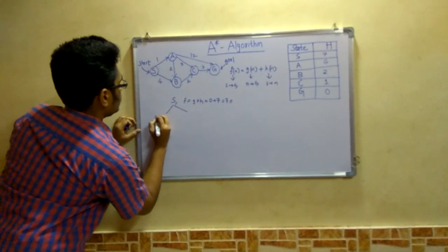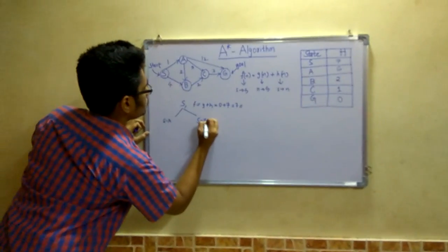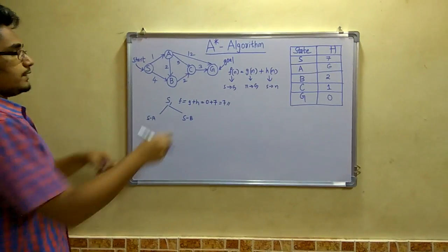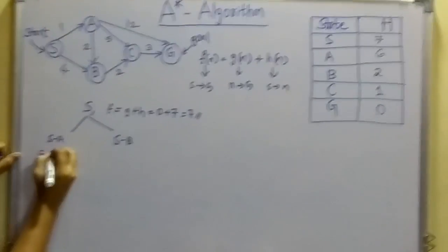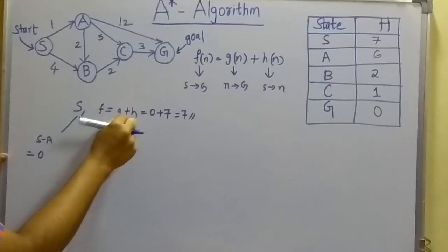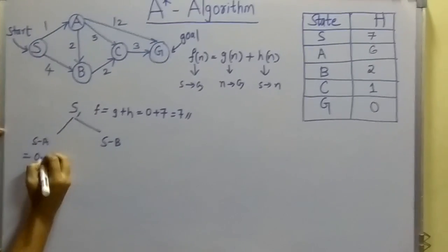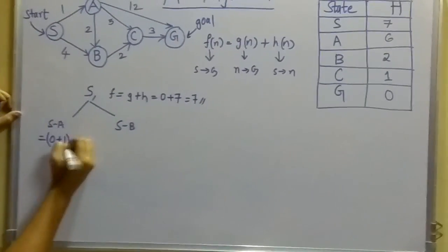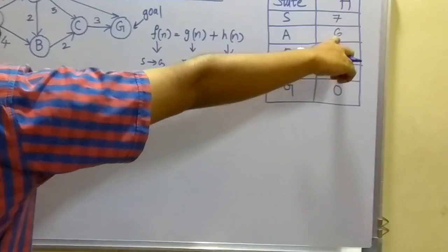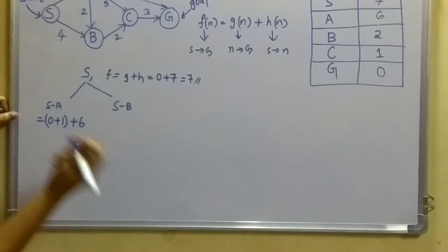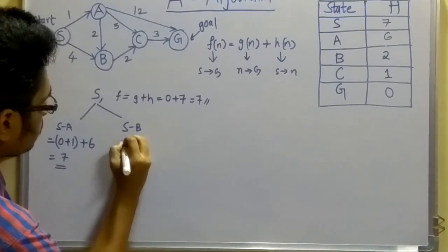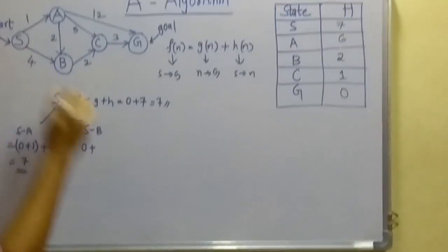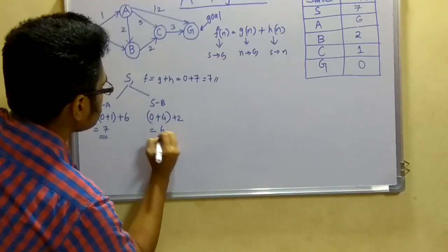For S to A, applying F = G + H: G remains 0 from S, and S to A distance is 1, plus the heuristic value of A which is 6. So that comes out to be 7. For S to B: G is 0, plus S to B distance is 4, and the heuristic of B is 2. So it comes out to be 6.